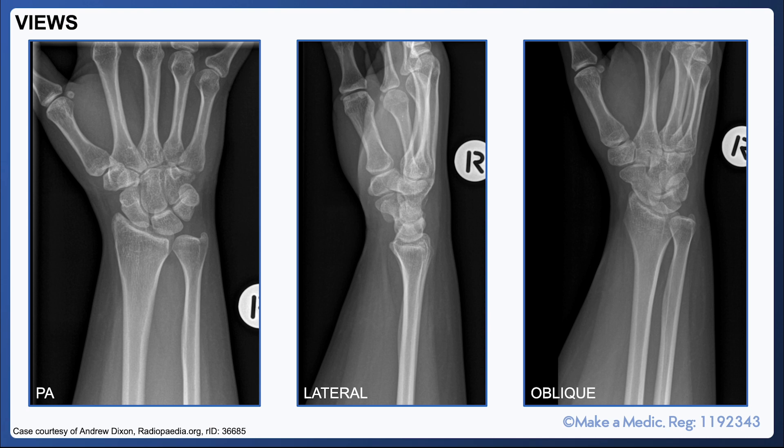When an x-ray is performed of the wrist, you will likely see two views: the PA and the lateral, and perhaps an oblique view as well. So this is what a normal wrist should look like.